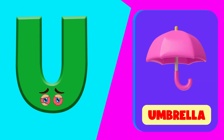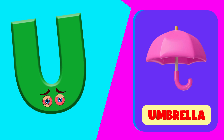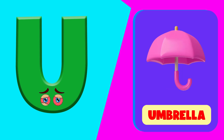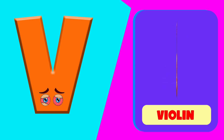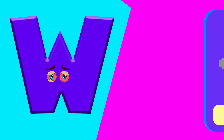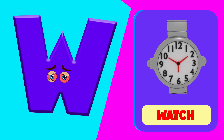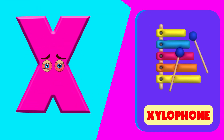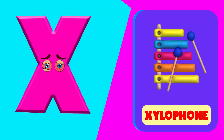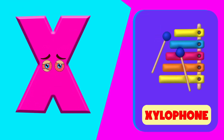U is for umbrella. u, u, umbrella. V is for violin. v, v, violin. W is for watch. w, w, watch. X is for xylophone. x, x, xylophone.